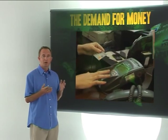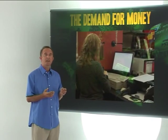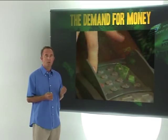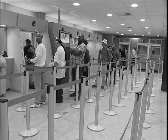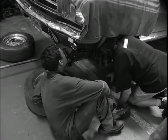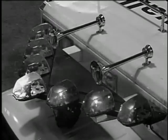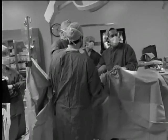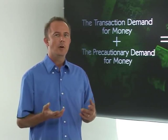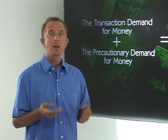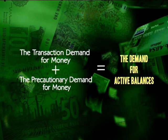A rise in household income, perhaps as a result of economic growth, increases the number of transactions people can afford, and so they'll demand more money. As well as the transaction demand for money, money also has other functions. Many people also keep some money aside for emergencies — unforeseen expenditure over and above their normal spending. Maybe the car breaks down, or one of the family needs medical attention. It's useful to have some money set aside to cover this, and this is called the precautionary demand for money. Again, the amount of money we keep aside as a precaution will also depend on our income level. It can be quite difficult at times to distinguish between these two types of demand, so they're often grouped together and called the demand for active balances.